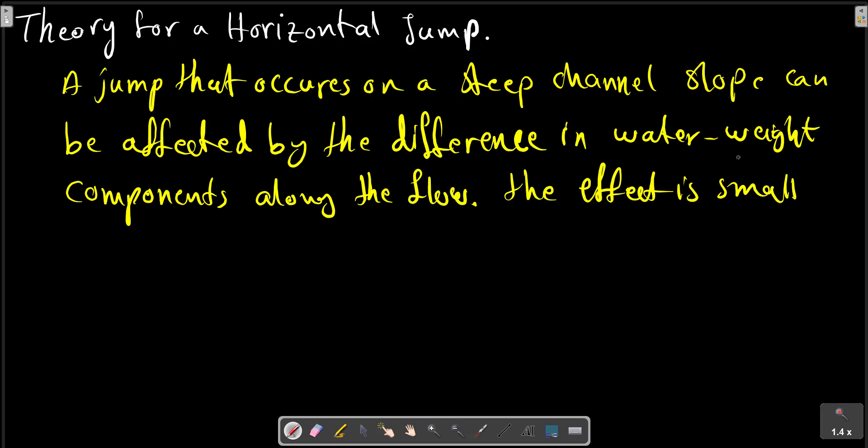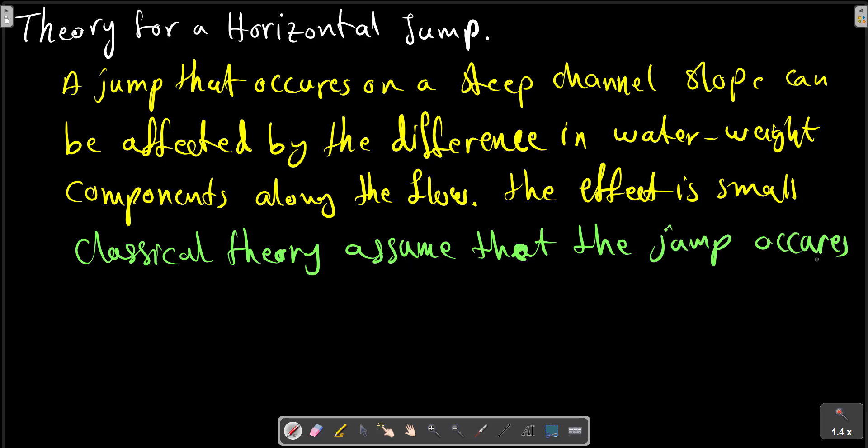The classical theory assumes that the jump occurs on a horizontal bottom.